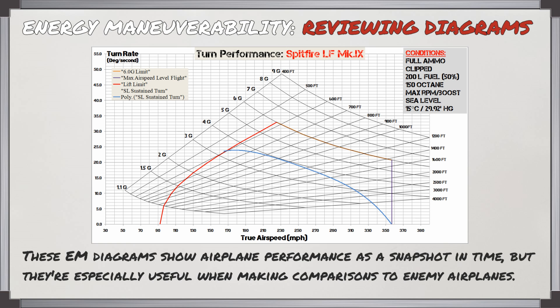EM diagrams show the airplane's performance as a snapshot in time based on those conditions. But they become really useful when you want to make comparisons to enemy airplanes — and that's what we're going to look at now.